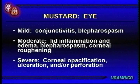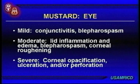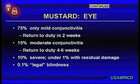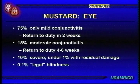Eye injuries from mustard range from mild conjunctivitis to severe damage. The mild category — 75% of cases — self-healed in about two weeks with little or no therapy, just TLC. The 15% intermediate category took four to six weeks but healed without residual damage. The remaining 10% were severe with residual damage, and about 0.1% of those patients met criteria for legal blindness.